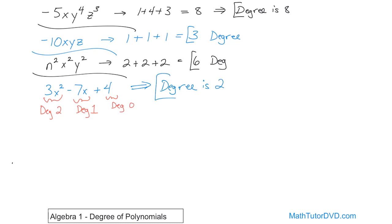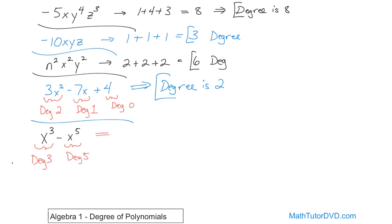If you have multiple terms in a polynomial, you just look at each one individually. For instance, if we have the binomial x cubed minus x to the fifth power, what would be the degree? You look at each term individually: the first term has one variable, so the degree is 3; the second term has one variable, so the degree is 5. For the whole polynomial, the degree is 5.